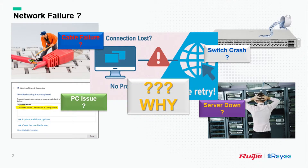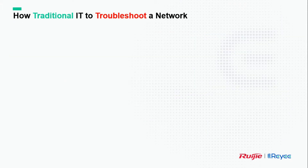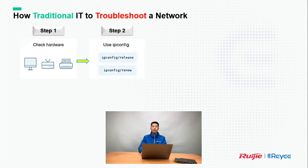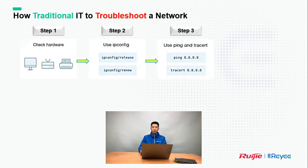So how do we resolve all these issues? Traditional IT will do network troubleshooting in 7 steps. Step 1: check your hardware for any hardware issues. Step 2: use ipconfig to check your IP address. Step 3: use ping or traceroute to check your network issue.